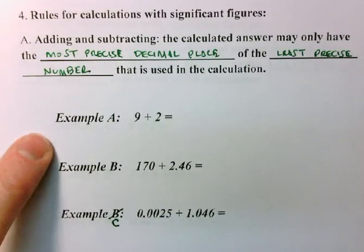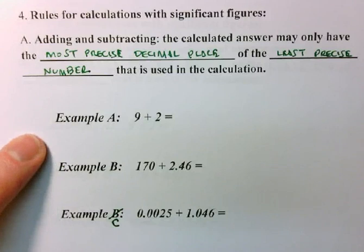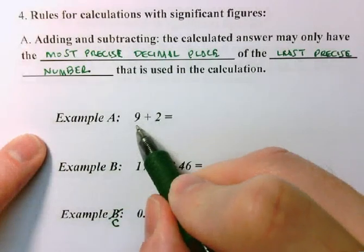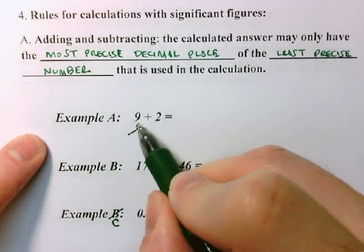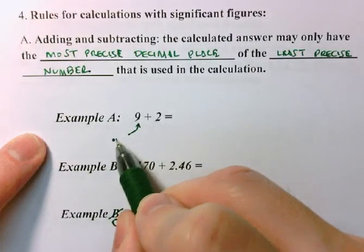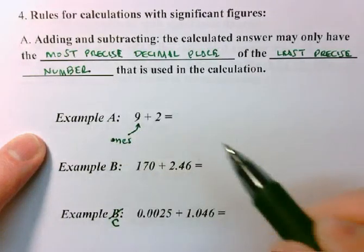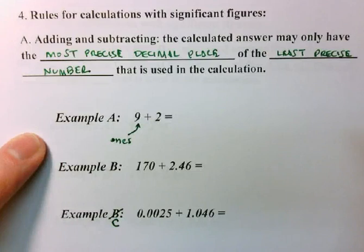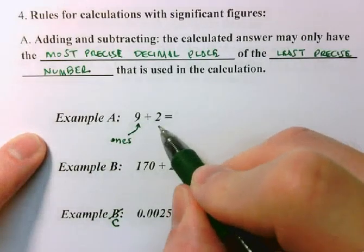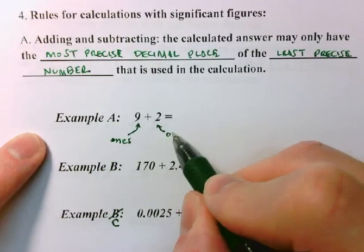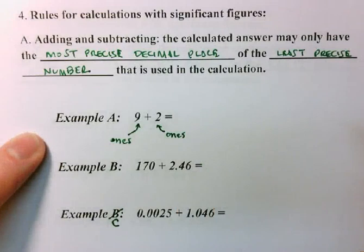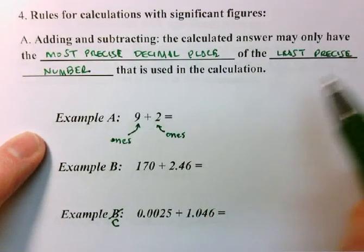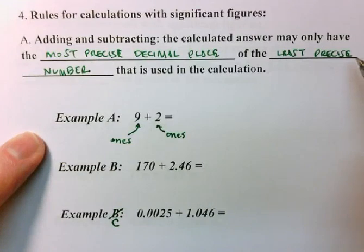Take a look at example A. For example A, notice that the most precise decimal place for this number is the ones column, because it has a sig fig in the ones position. That's also the case for this second number. Its most precise decimal place is the ones column. Which means that my answer here can only have a precision out to the ones column. It cannot be more precise than that.